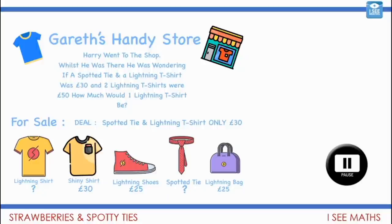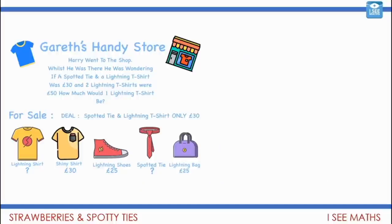And by the way, I love the graphics. Well done. So let's have a look. I've made the image slightly smaller so I can put my pictures here. So the information that we were given was the lightning shirt and the spotty tie, £30. Two lightning t-shirts, £50.